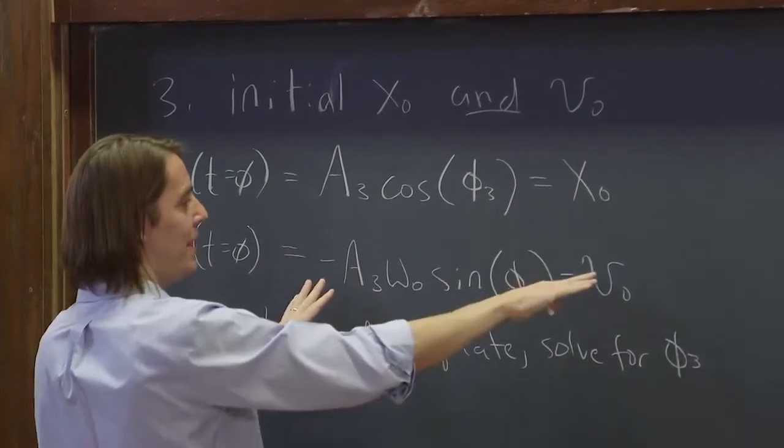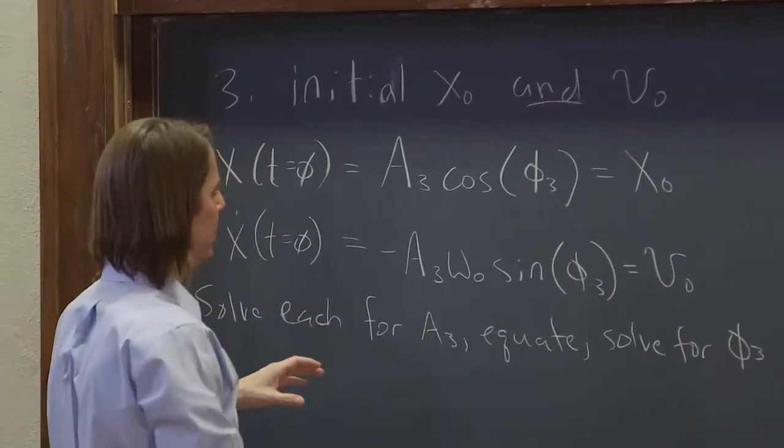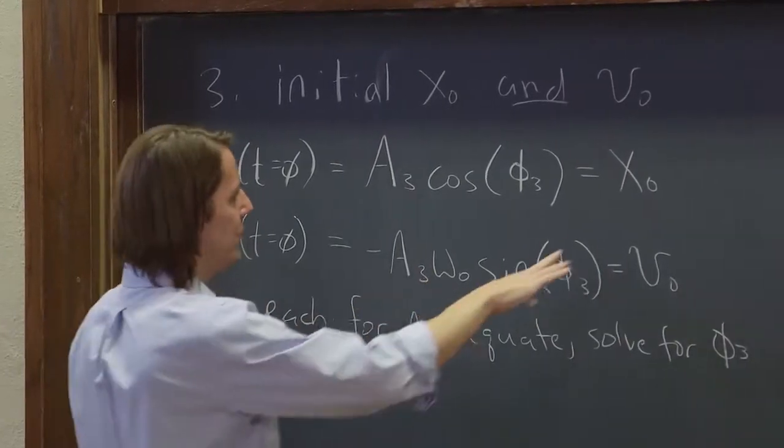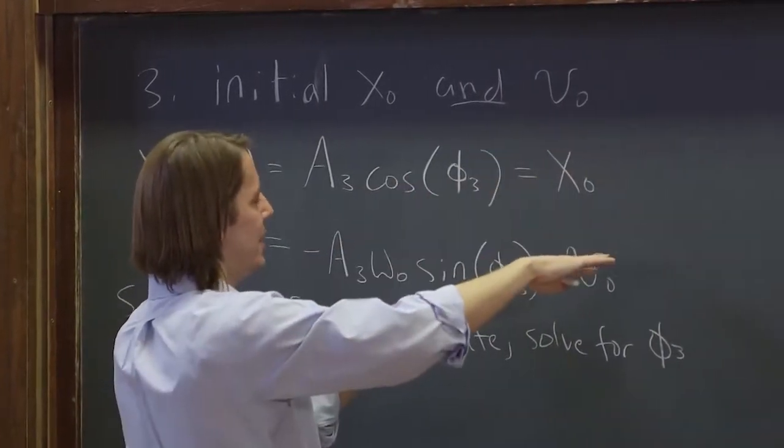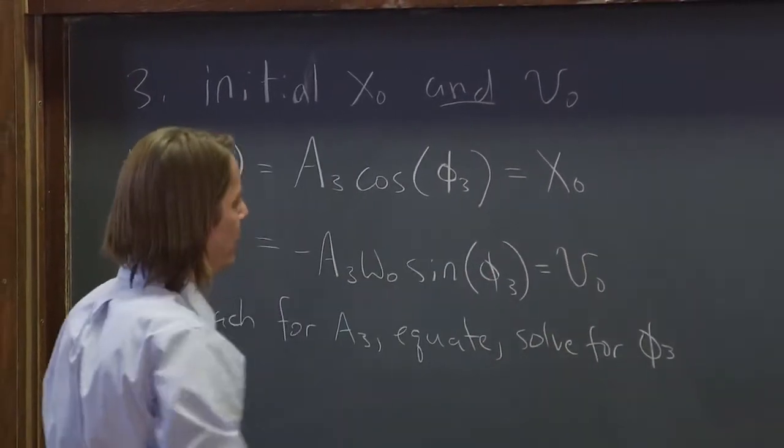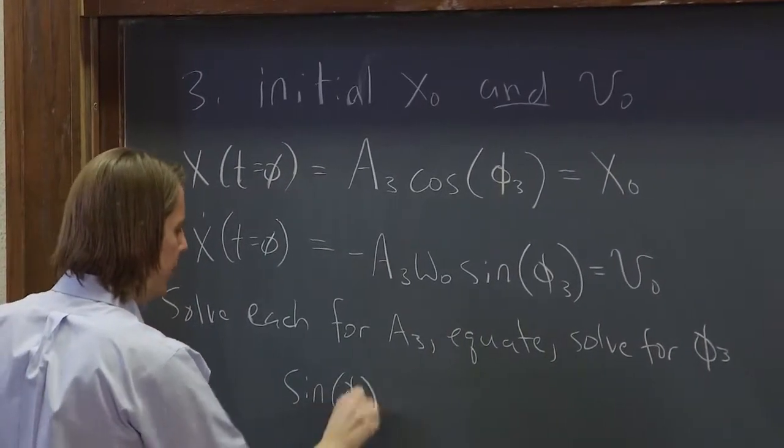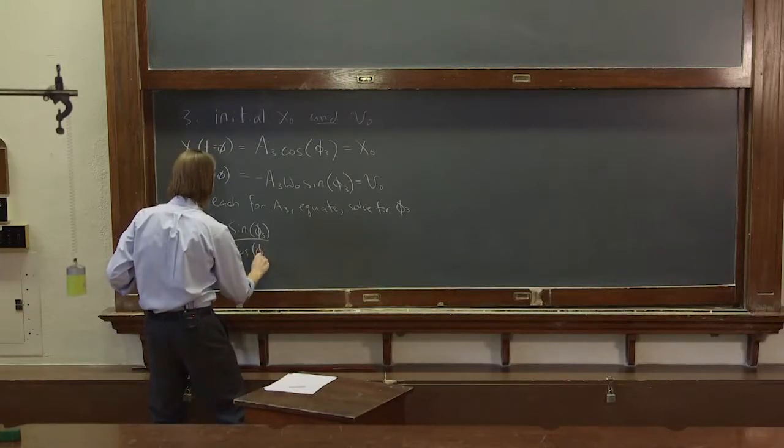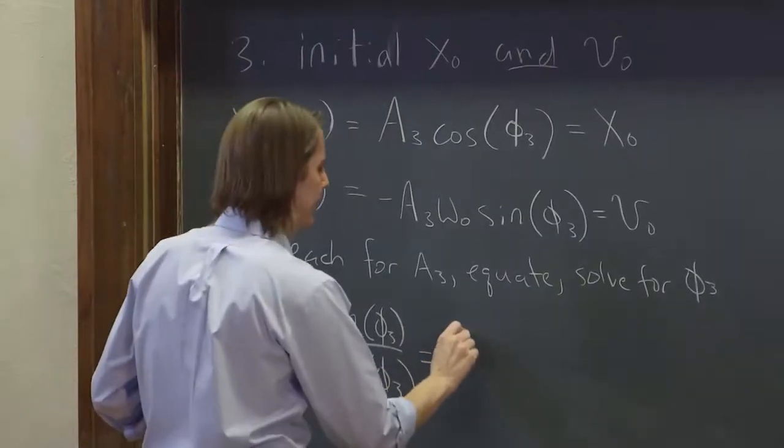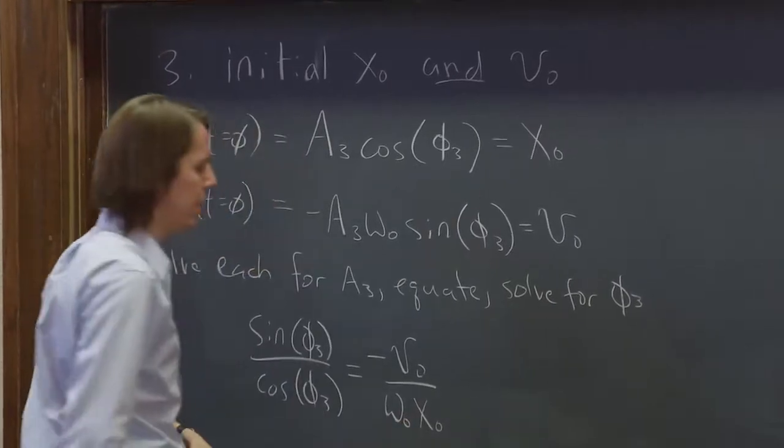This a three would become negative v-naught over omega-naught over sine of phi three. And then if you equated those two sides, you'd have x-naught over cosine equals minus v-naught over omega-naught sine. And then you could switch them around to where you got sine phi three over cosine phi three.